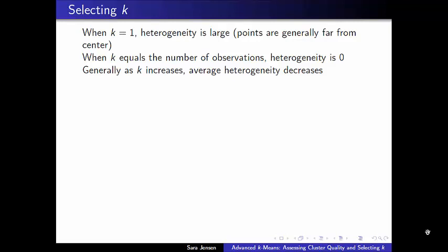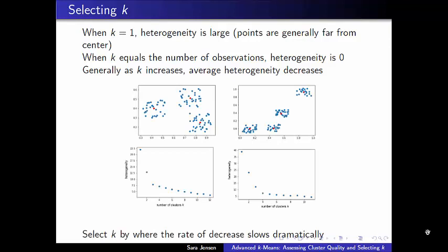We can gather that as k increases, heterogeneity generally decreases. However, having as many cluster centers as observations is clearly an indication of overfitting. If nothing in your dataset is even remotely similar to anything else, and every point must stand as its own cluster, then there's no point in running clustering at all. So somewhere in between, there needs to be a happy medium, and we'd like to identify the proper k value by graphing heterogeneity as a function of k.